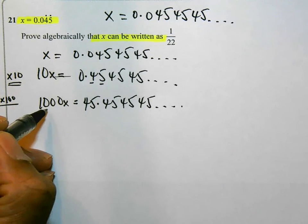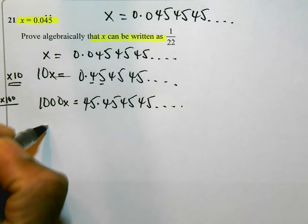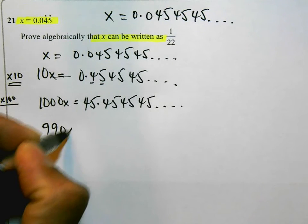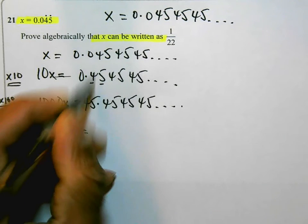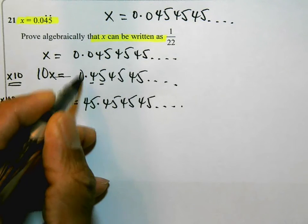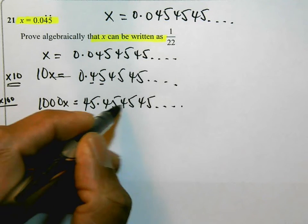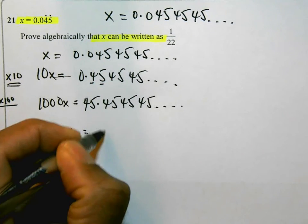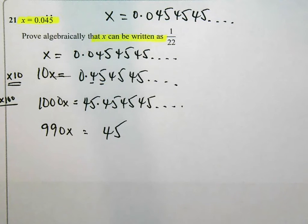So, let's do this subtraction, 1000x take away 10x is 990x. If I do this subtraction here, 45 take away 0 is 45, but the decimal parts are going to disappear. So, I end up with that 45 there.